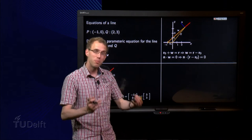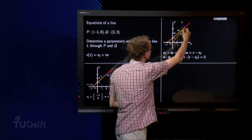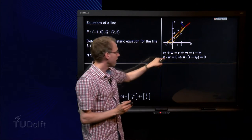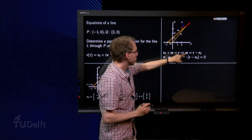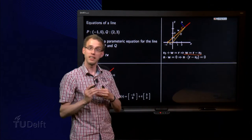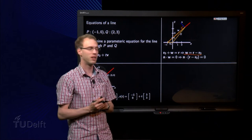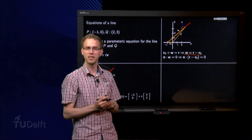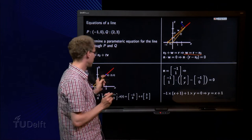And if we now compute the inner product with n, we see n and w are orthogonal. So that means that n inner product w equals zero. So if we take the inner product of this equation over here, we find that normal vector inner product with r minus r0 equals zero. That doesn't really look like y equals ax plus b, right?